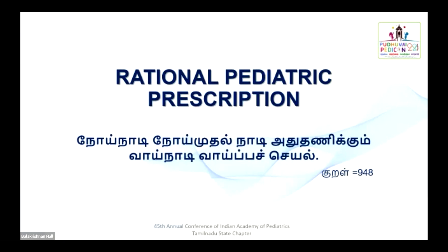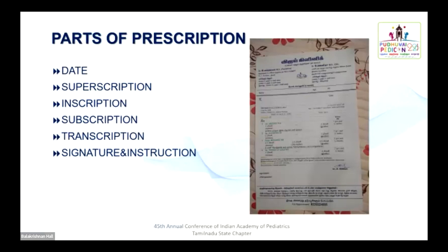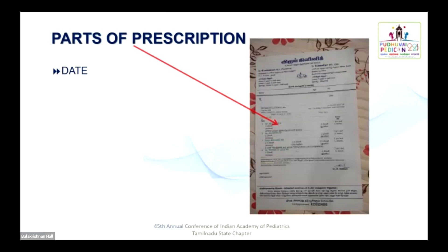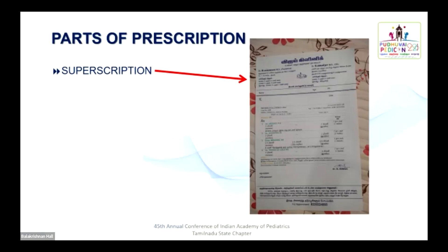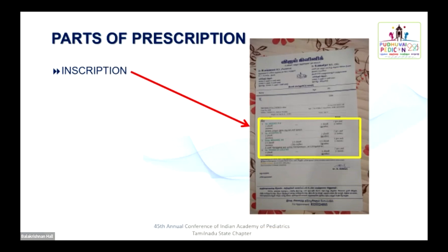Before going to the topic proper, we need to know certain things about the prescription, that is, parts of the prescription. First is date — it is important. Next part will be superscription, which contains the details about the prescriber as well as the patient. Next important part will be inscription, which is the major part consisting of details about the drugs, dosage, frequency, etc.